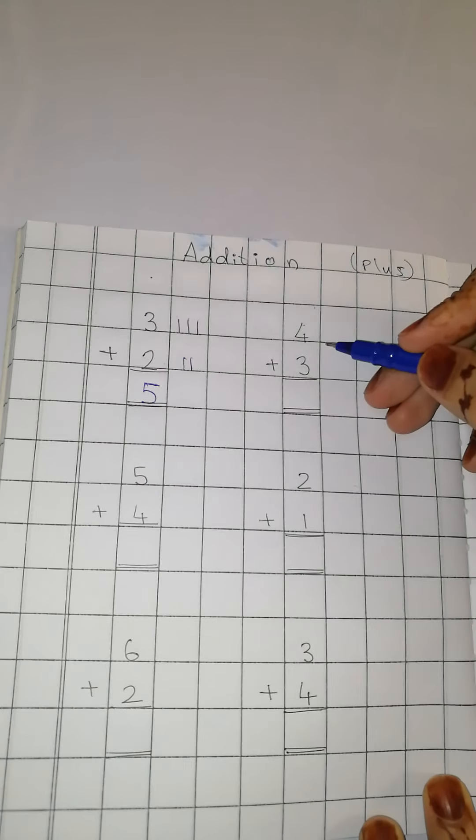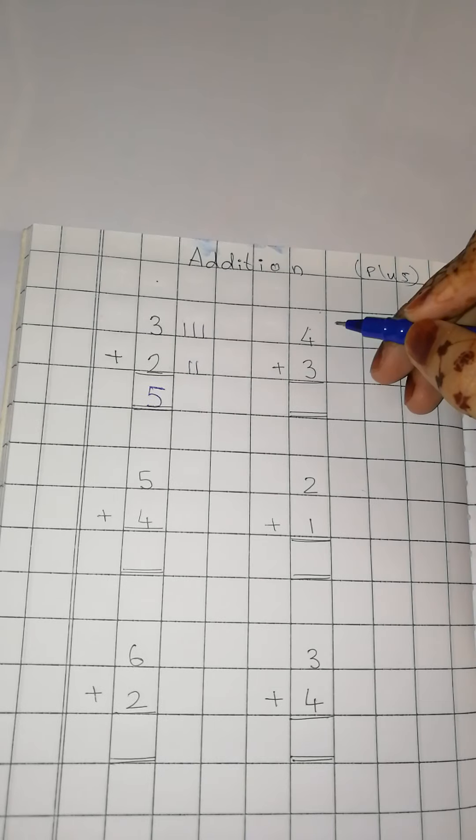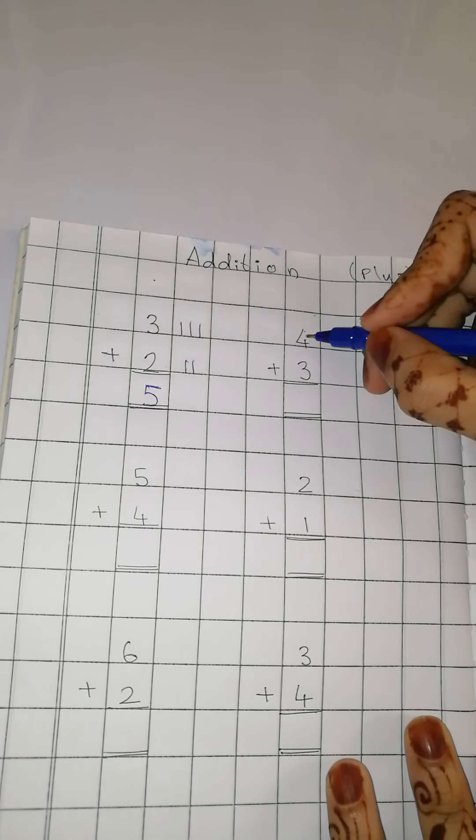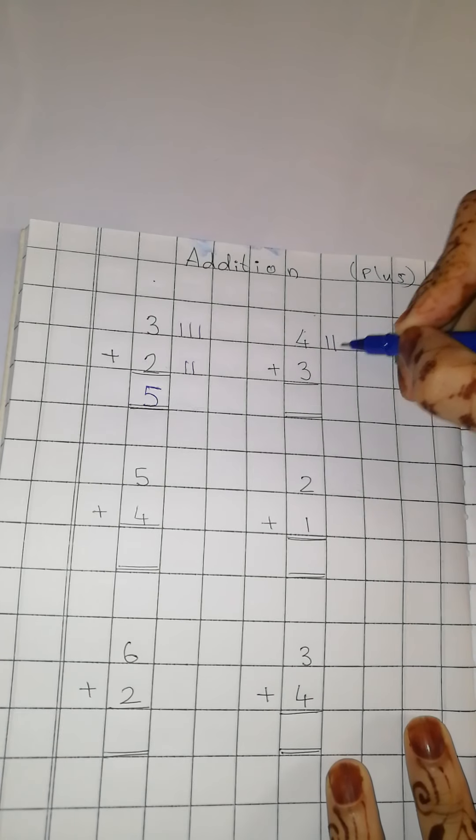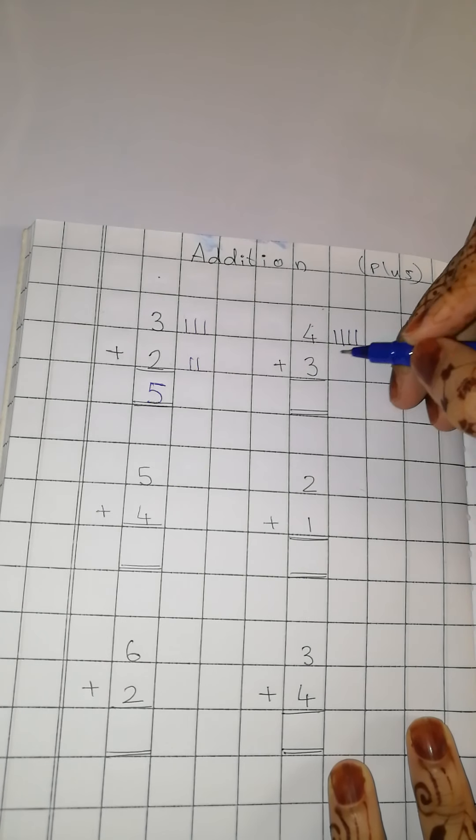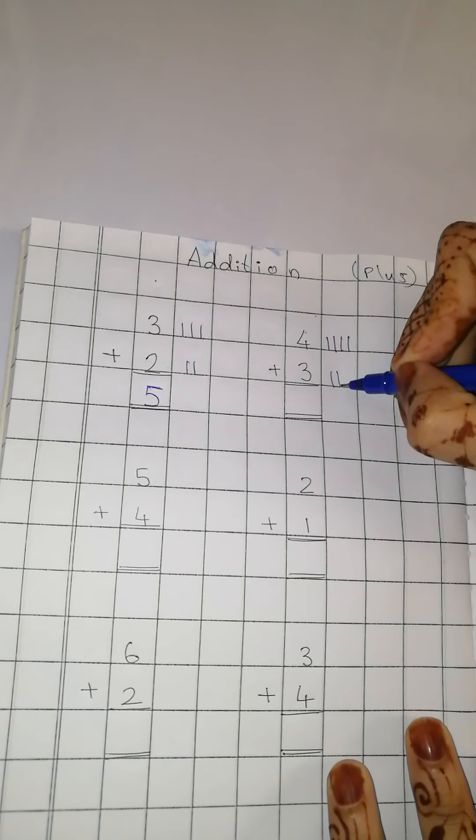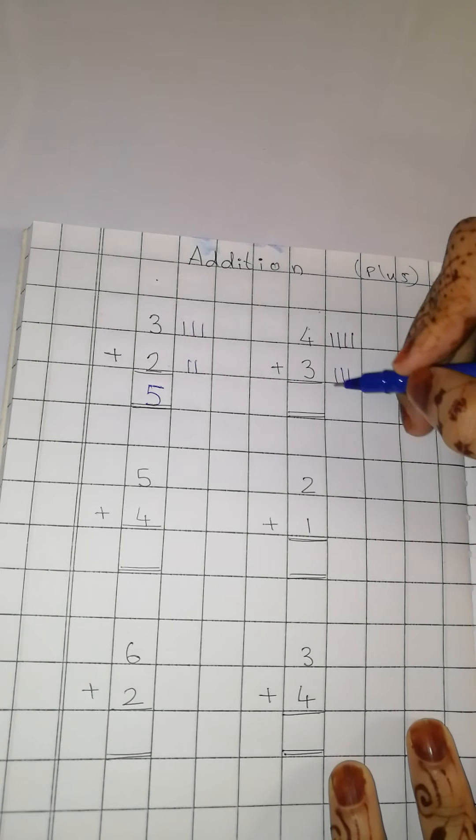Understood? Now let us see one more sum. This is number 4. So how many lines are you going to draw here? 4. 1, 2, 3, 4. Aur usmeh aur kitne lines draw karne hai? 3. 1, 2, 3.